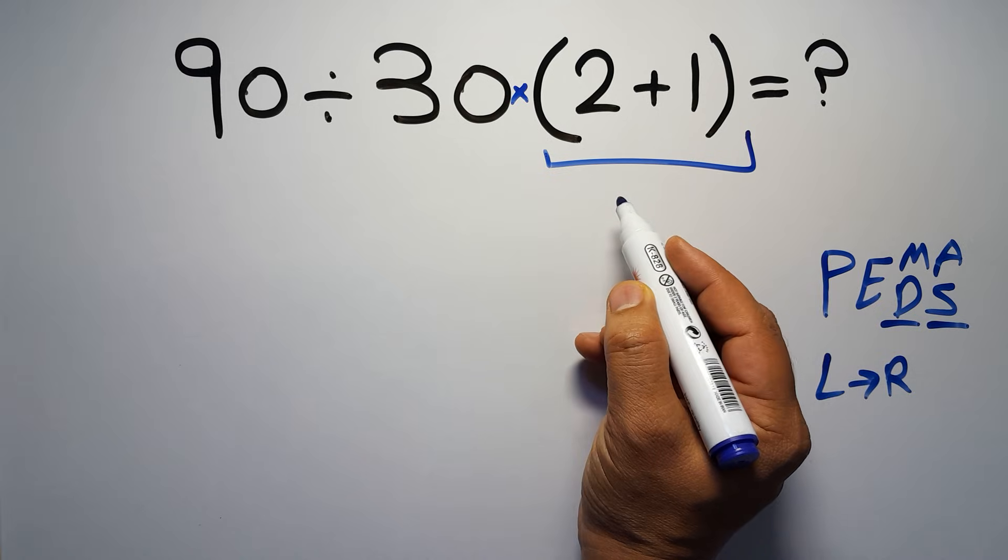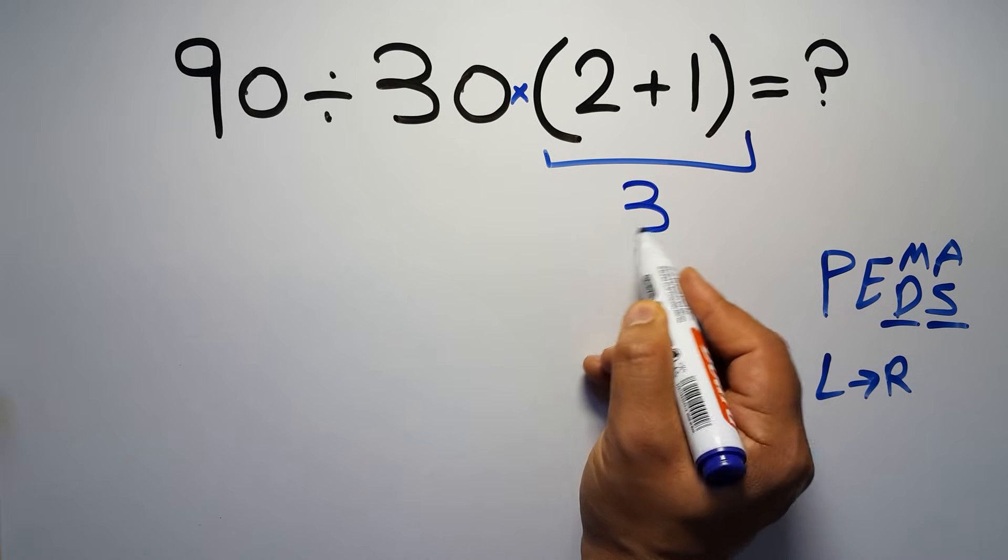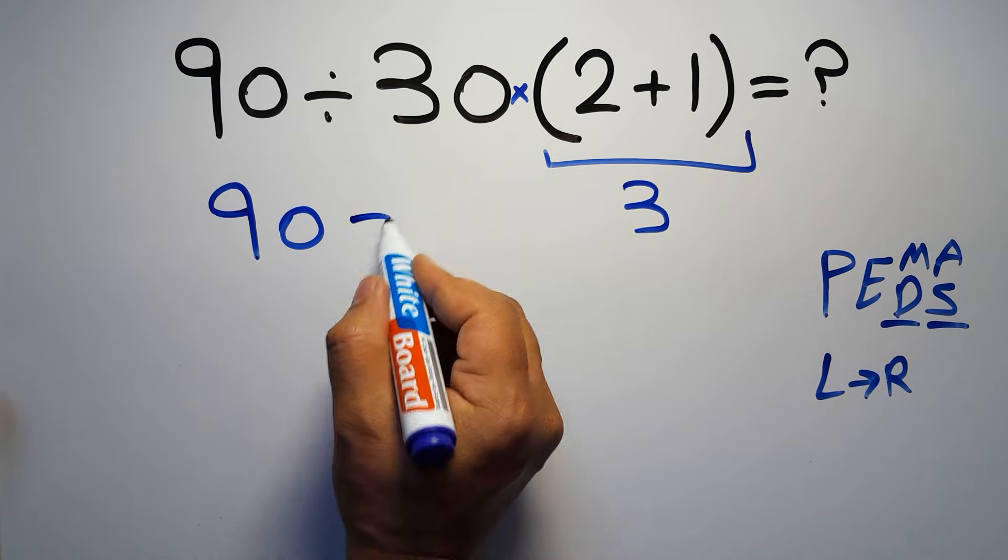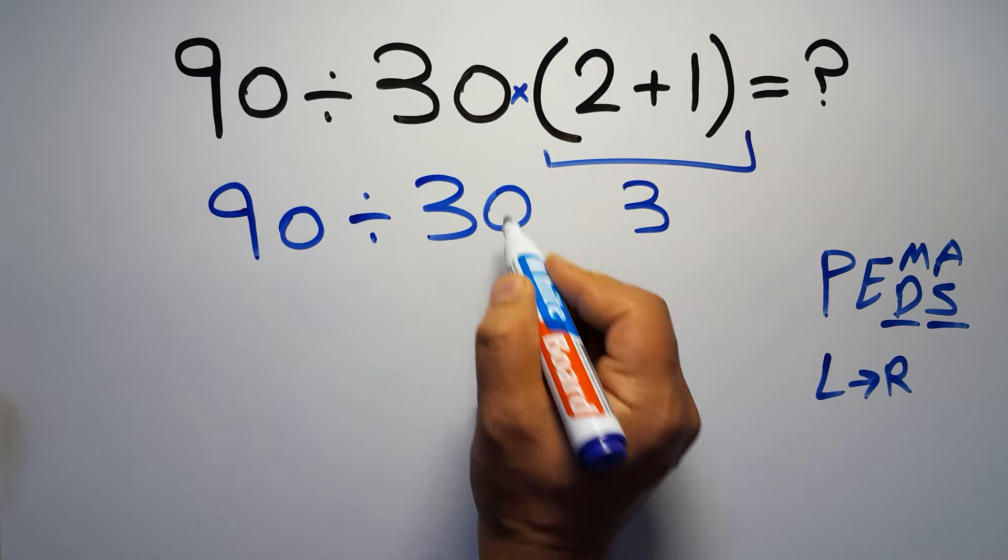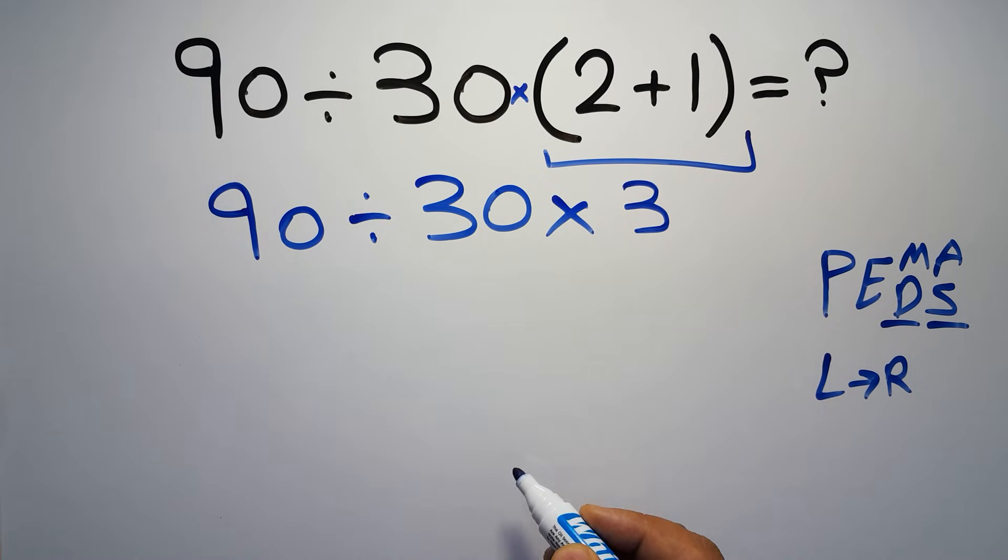First we have to do the parentheses. Inside the parentheses we have 2 plus 1, which equals 3. So 90 divided by 30, then times 3.